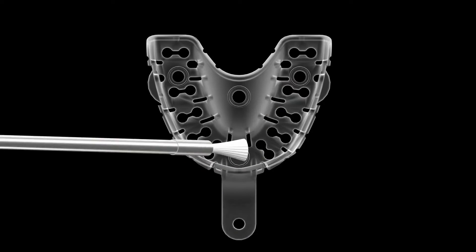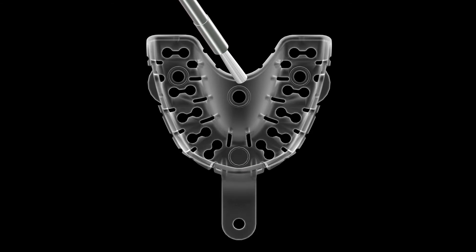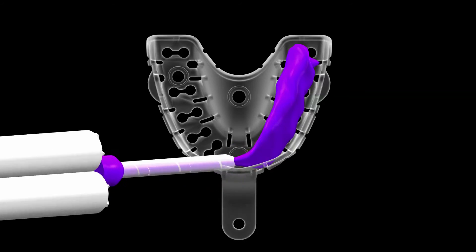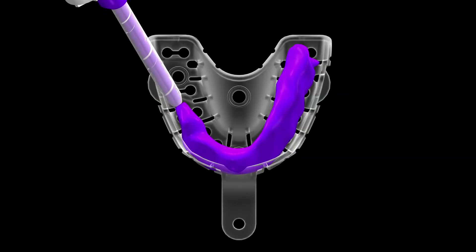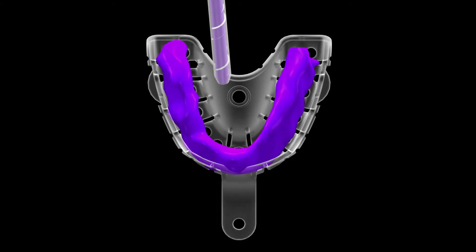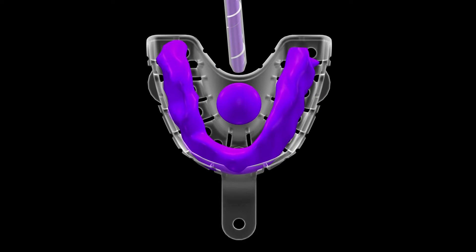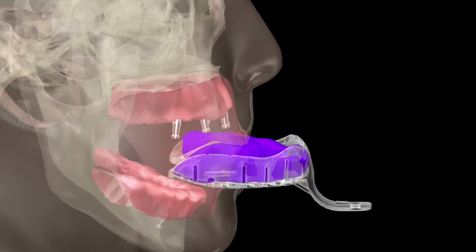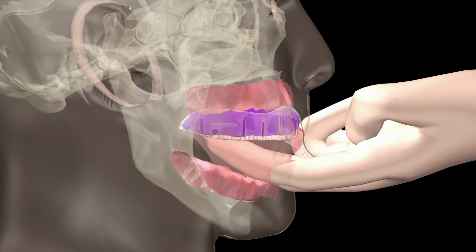Place PVS adhesive, followed by injecting a ribbon of extra-fast rigid PVS material into the tray, allowing more material in the area of edentialism and a much smaller amount opposite the implant copings and the palate. Place back into the mouth carefully centering the tray.